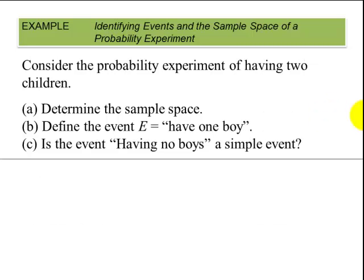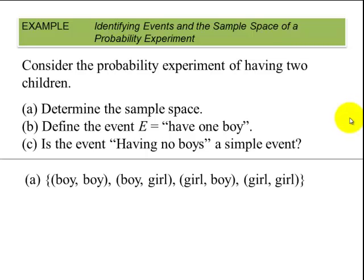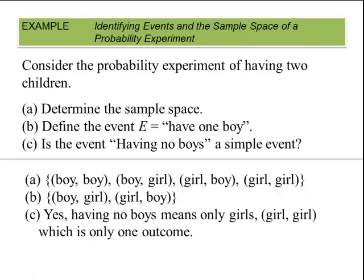Let's look at this example. Consider the probability experiment of having two children. Determine the sample space. Define the event E: have one boy. And is the event having no boys a simple event? First, the sample space would be: the first child could be a boy and then the second child could be a boy. Then we could have the first child being a boy and then a girl. Or we could have a girl then a boy. Or we could have both girls. So this is the sample space. To have one boy happens two ways: boy-girl and then girl-boy. And then the last one: Is the event having no boys a simple event? And the answer is yes because there is only one outcome, and that's where all of them are girls.